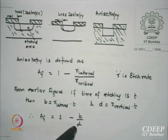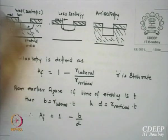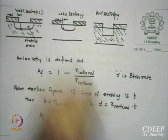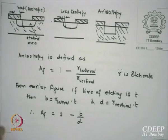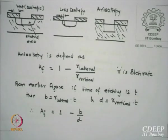AF is essentially 1 minus B divided by D. If D is the film thickness vertically down and B is the bias laterally, then B/D gives us 1 minus AF as the anisotropic coefficient, and we expect that to be as close to 1 as possible.